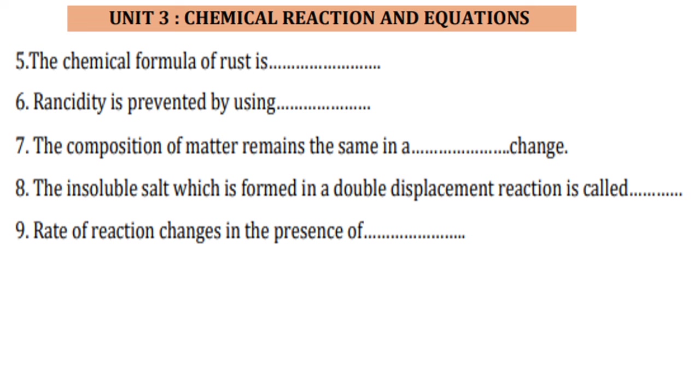The chemical formula for rust. The rust formula is ferrous oxide. It means Fe2O3, it is called as ferrous oxide. Rancidity is prevented by using antioxidant. It is actually an oxidation process and therefore rancidity can be prevented by using antioxidant.